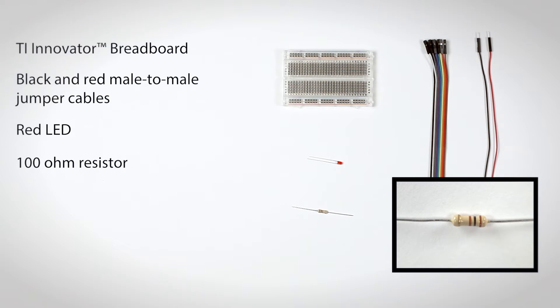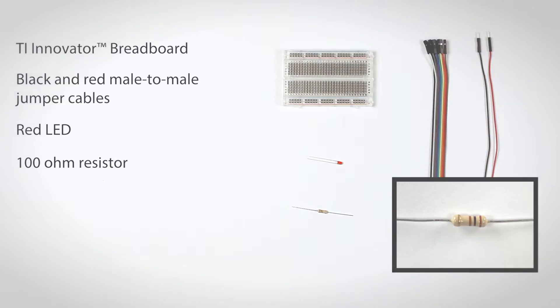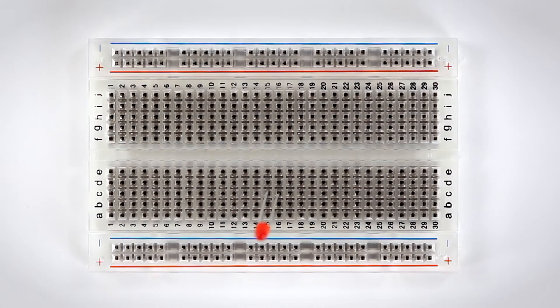And a 100 ohm resistor — it has two brown bands on either side of a black band. Start by plugging the LED into the breadboard. The legs go in side-by-side pins on different rows.